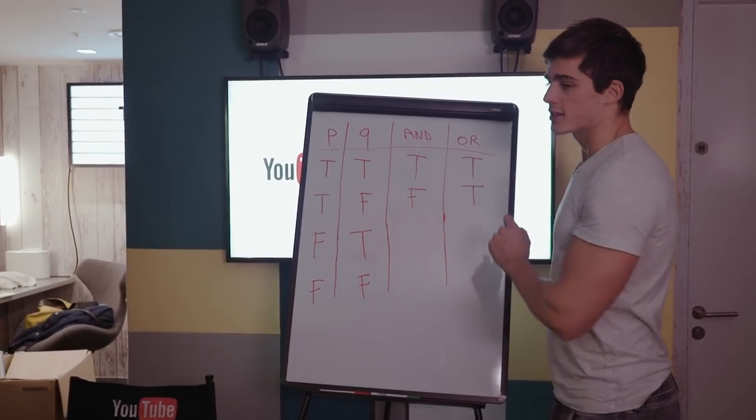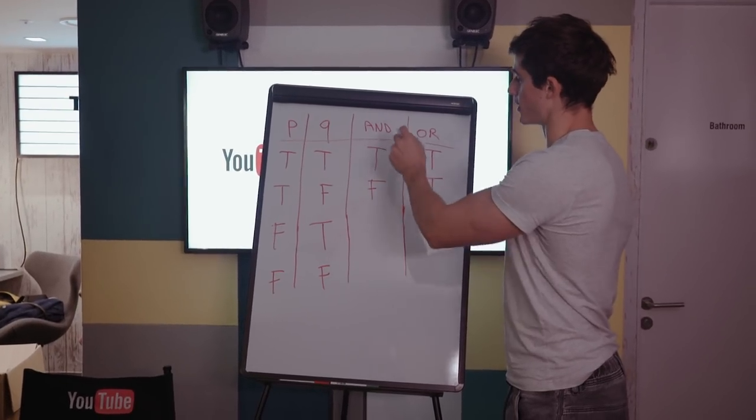Alright, so if we have two events P and Q, if P and Q are both true, then obviously P and Q is true, and similarly for P or Q.